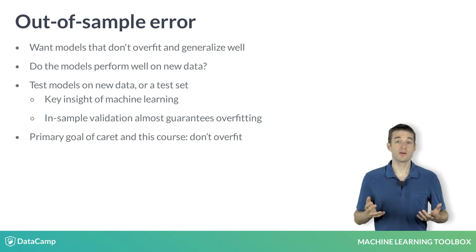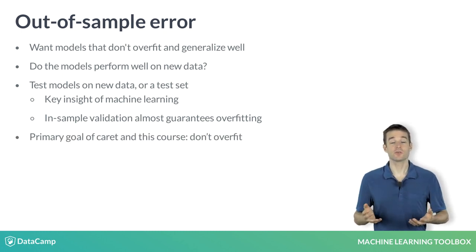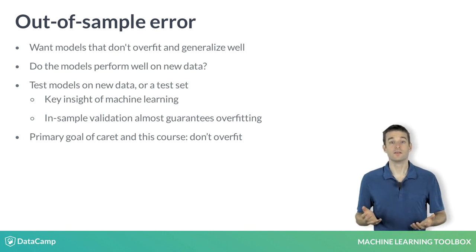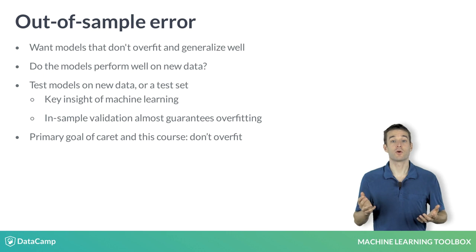Out-of-sample validation helps you choose models that will continue to perform well in the future. This is the primary goal of the Caret Package in general and this course specifically: don't overfit. Pick models that perform well on new data.